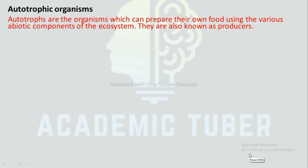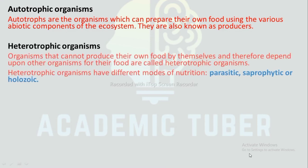Autotrophic organisms: Autotrophs are organisms which can prepare their own food using the various abiotic components of the ecosystem; they are also known as producers. Heterotrophic organisms: Organisms that cannot produce their own food and therefore depend upon other organisms for their food are called heterotrophic organisms. Heterotrophic organisms have different modes of nutrition: parasitic, saprophytic, or holozoic.